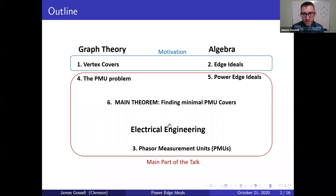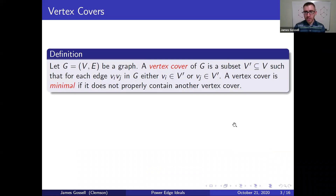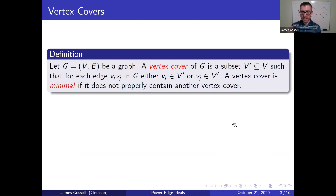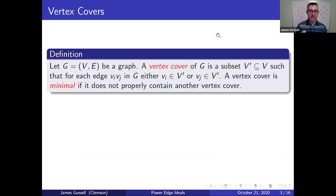The first definition is a vertex cover. Given a graph G, a vertex cover is a subset V-prime of the vertex set such that for each edge V_i, V_j in the graph, either V_i is in the vertex cover or V_j is in the vertex cover. A vertex cover is minimal if it does not properly contain another vertex cover.